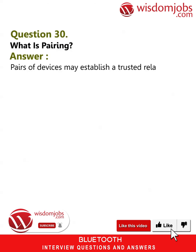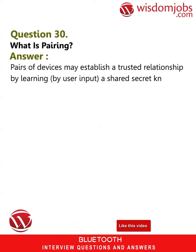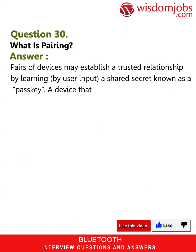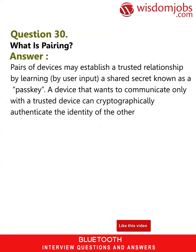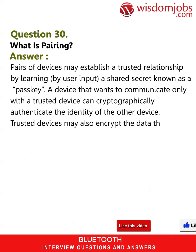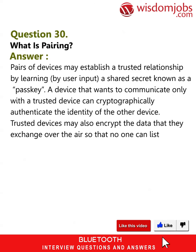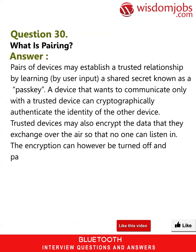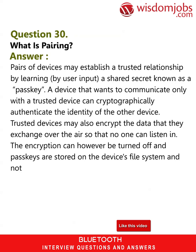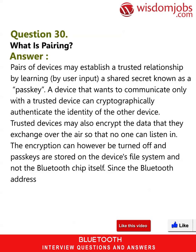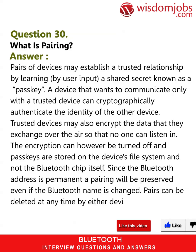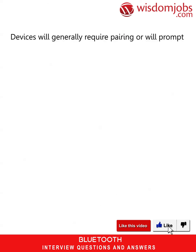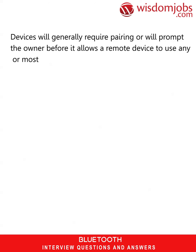Question 30: What is pairing? Answer: Pairs of devices may establish a trusted relationship by learning, via user input, a shared secret known as a passkey. A device that wants to communicate only with a trusted device can cryptographically authenticate the identity of the other device. Trusted devices may also encrypt the data they exchange over the air so that no one can listen in. The encryption can however be turned off, and passkeys are stored on the device's file system and not the Bluetooth chip itself. Since the Bluetooth address is permanent, a pairing will be preserved even if the Bluetooth name is changed. Pairs can be deleted at any time by either device. Devices will generally require pairing or will prompt the owner before allowing a remote device to use any or most of its services.